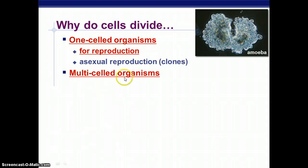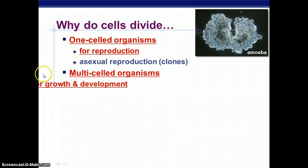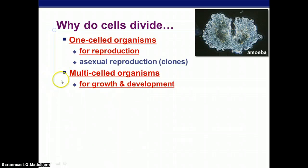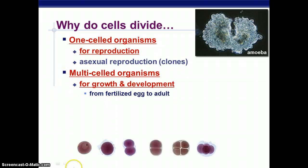For multi-celled organisms — things like us, you, me, and other animals — we use it for growth and development. From fertilized egg to adult, you have this series of divisions which eventually leads to an adult.